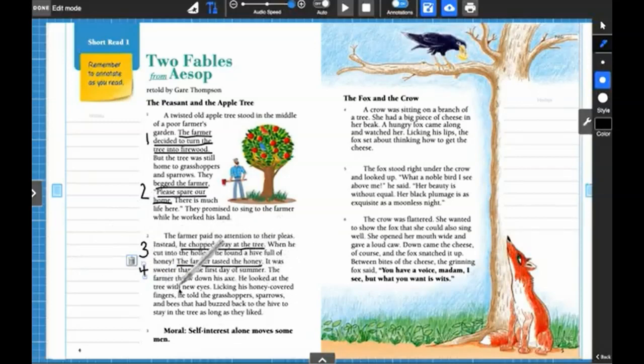Let's read the next part where he changes his mind. He looked at the tree with new eyes. He's looking at it in a different way. Licking his honey-covered fingers, he told the grasshoppers, sparrows, and bees that had buzzed back to the hive to stay in the tree as long as they liked. So he told the animals to stay in the tree as long as they liked. That is my last key event because that is the last action that is going to affect what's happening in the story. Instead of cutting down the tree, he's telling them that they can stay.